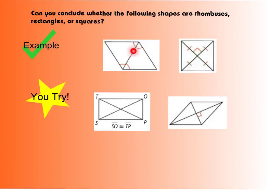I see that I have these tick marks, meaning that my diagonal has bisected angles. This means I have a rhombus.